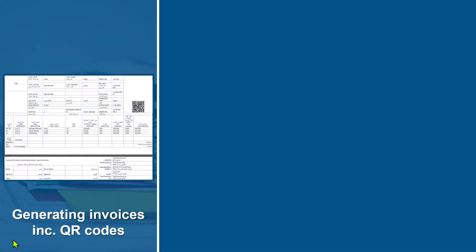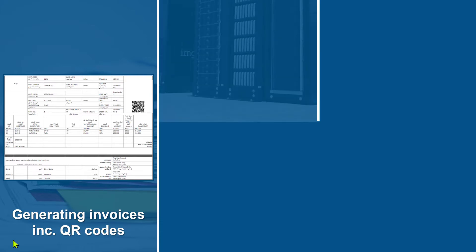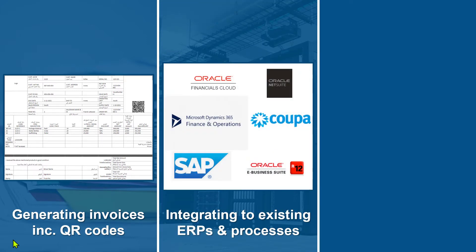First, we need to be able to generate invoices including QR codes, and this needs to be done automatically. Within the QR code you will find data like who the seller is, the VAT number, a timestamp, the actual VAT amount, and more. This is of course information that needs to be pulled from existing ERP systems.